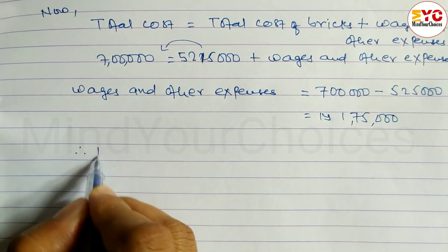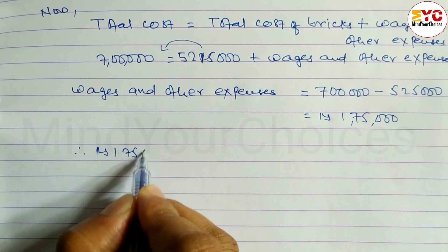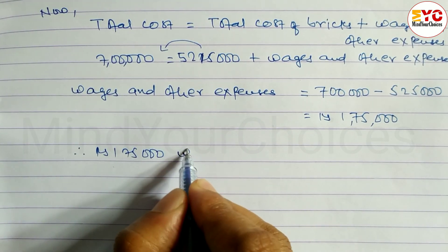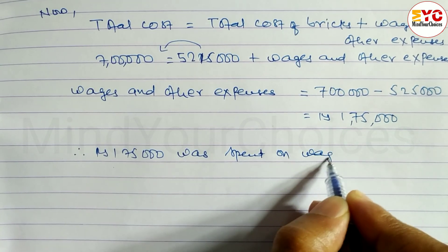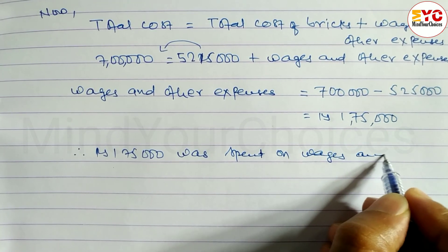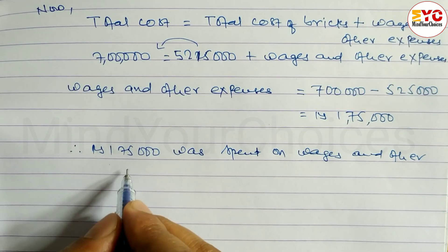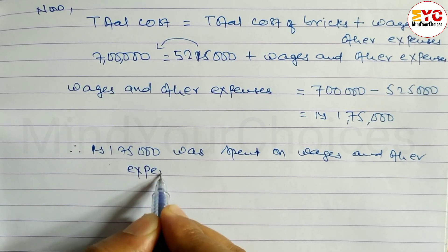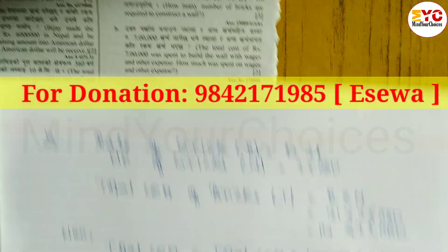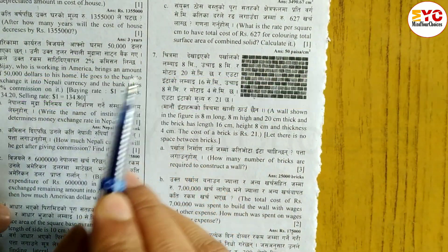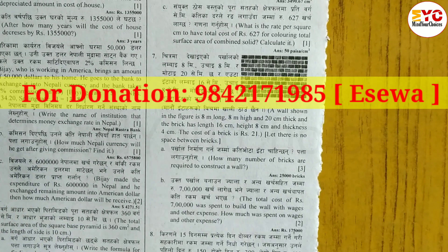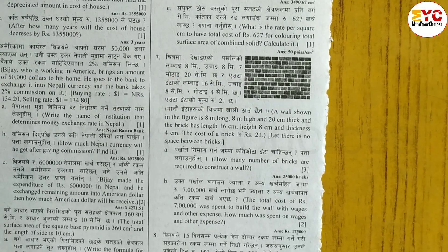Therefore, Rs. 1,75,000 was spent on wages and other expenses. Hope you understand this question, taken from the model question, question number 7 from cost estimation. Very important question. Please like, subscribe, and share with your friends. Thank you.